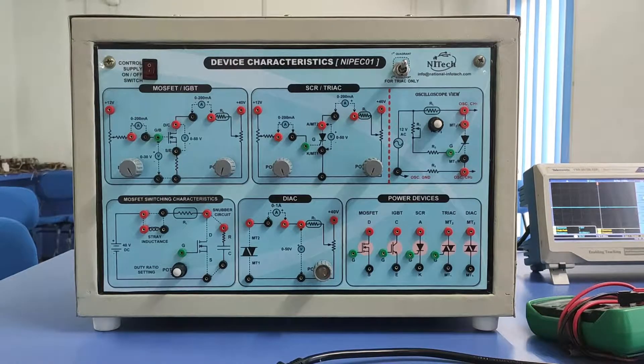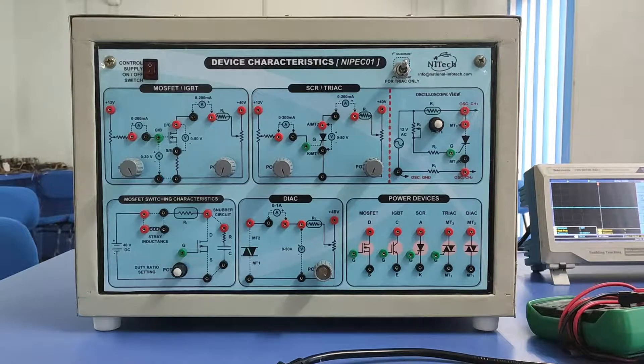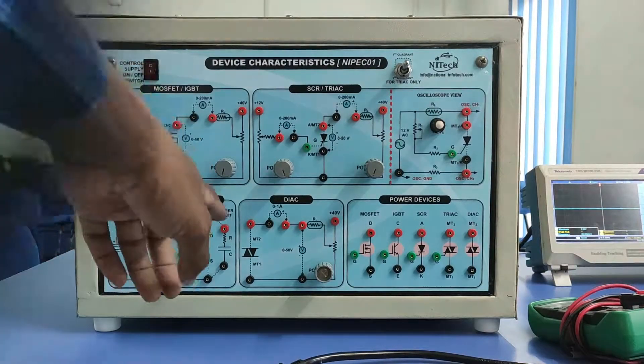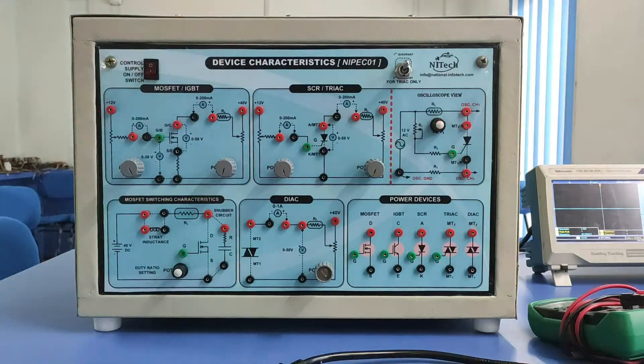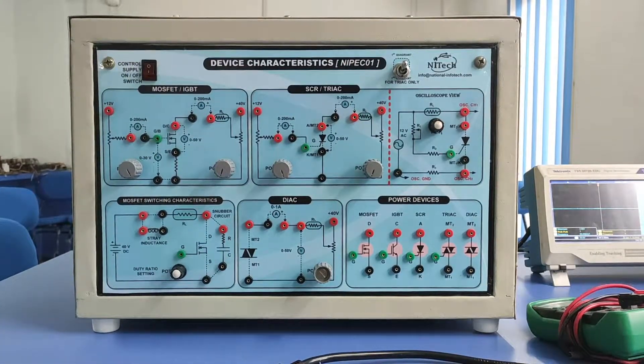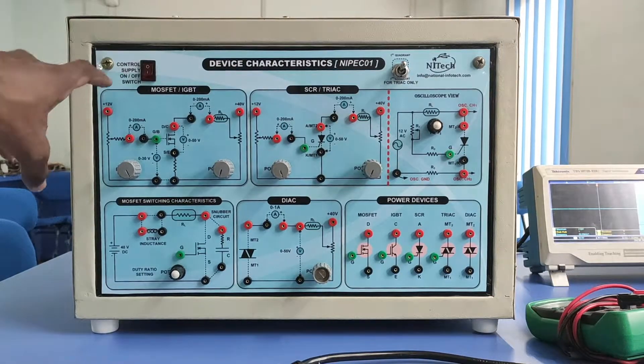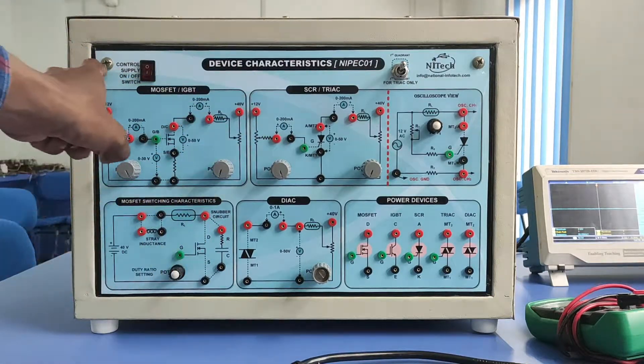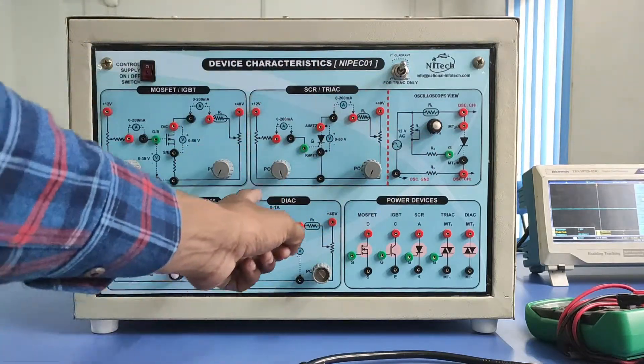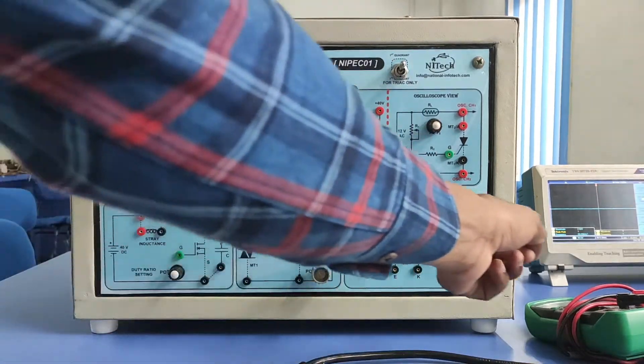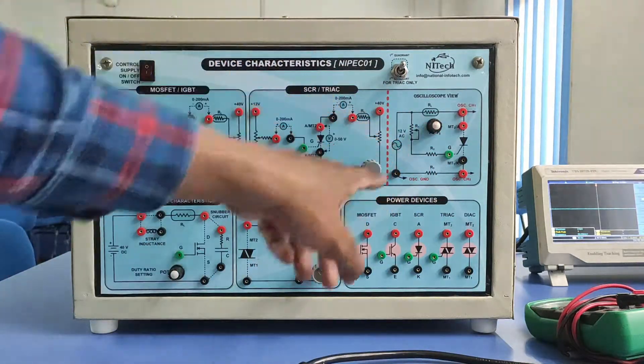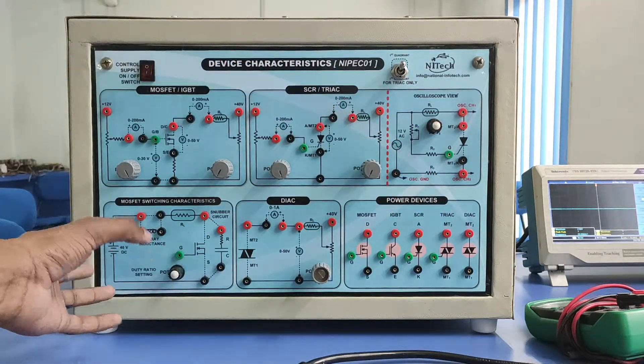Separately we have designed one DIAC firing circuit. On the front side, everything is printed and separated in the form of sections. This section is for MOSFET IGBT triggering circuit, this section is for SCR and TRIAC, this section is for DIAC, and these are all power devices. There are two extra sections.